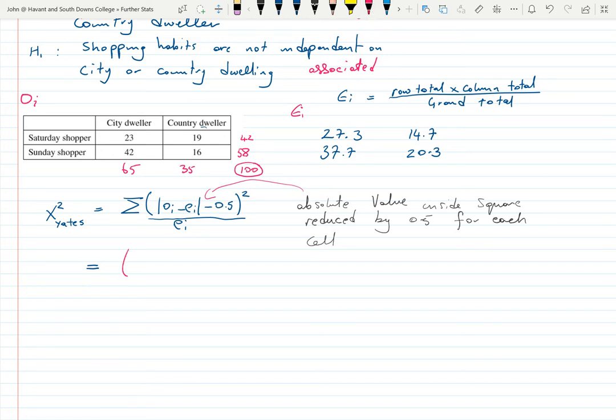Let's write it out. We've got Oi minus Ei, so that's 23 minus 27.3 minus 0.5 all over Ei which is 27.3, plus 19 minus 14.7 take away 0.5 squared over 14.7.